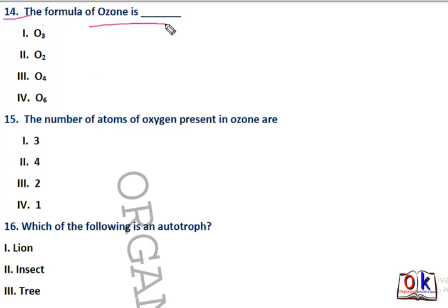Question number 14: the formula of ozone. Options are O3, O2, O4, or O6. Everyone knows — first will be the right answer. O3 is the formula for ozone.